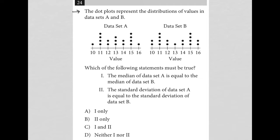So this question is a diagram question. We have this visual dot plot provided. So I'm going to lean a lot upon the dot plots here. The question says the dot plots represent the distributions of values in data sets A and B. The question goes on to say which of the following statements must be true.